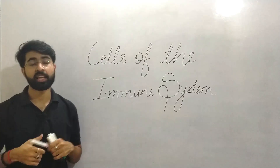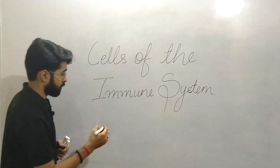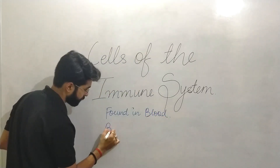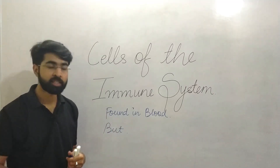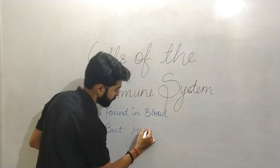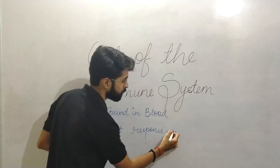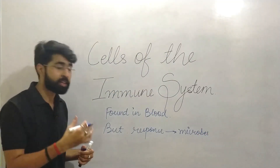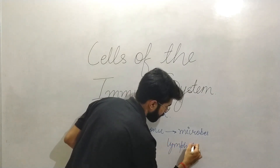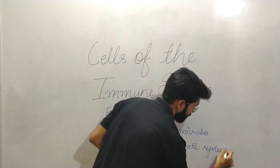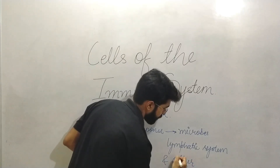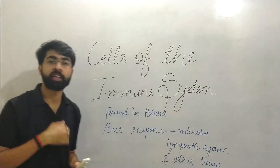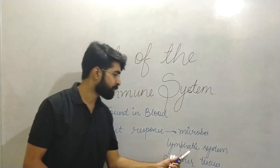These cells of the immune system are present as circulating cells and are found in the blood. However, their response to microbes — their interaction with and attempts to kill them — occurs in the lymphatic system and other tissues. So they circulate throughout the body in the blood, but their encountering and eliminating of microbes occurs in the lymphatic system and other tissues.